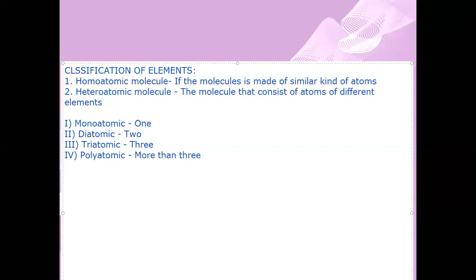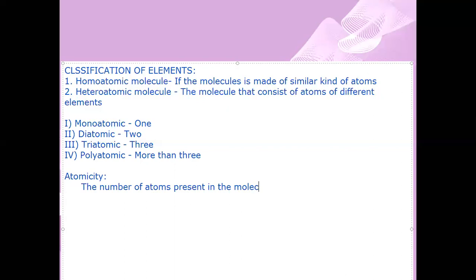This is the classification of molecules. The number of atoms present in a molecule is called its atomicity. So the number of atoms present in a molecule — how many atoms are present — that is called atomicity. You will note this in your observation.